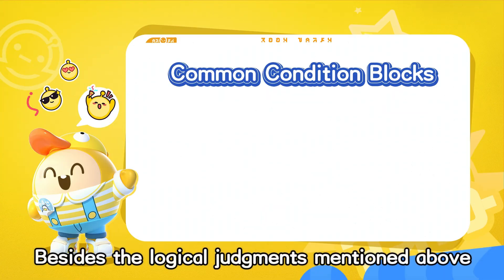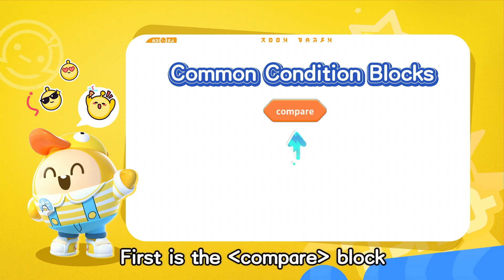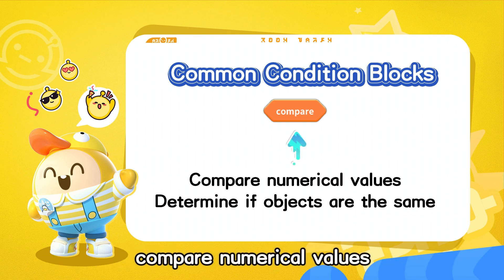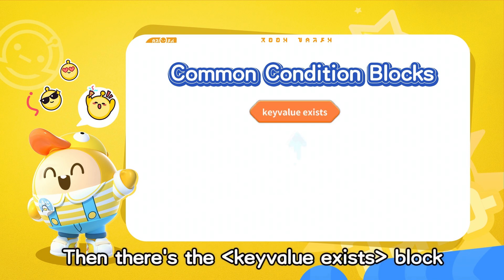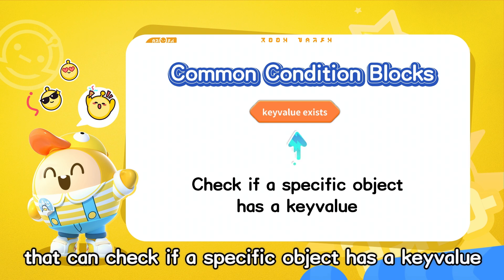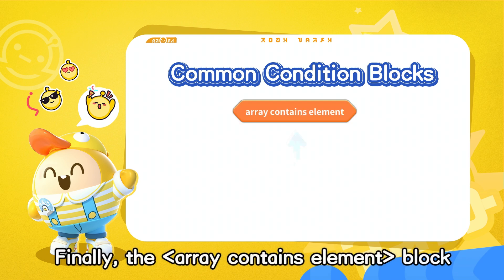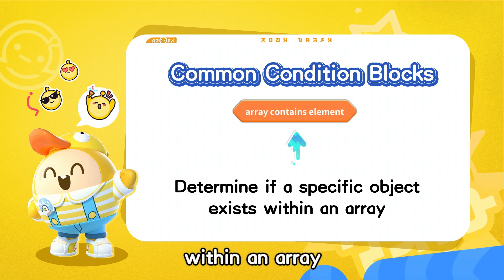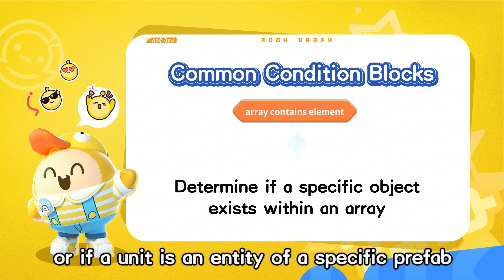Besides the logical judgments mentioned above, there are some condition blocks we often use. First is the Compare block, which can not only be used to compare numerical values, but also determine if objects are the same. Then there's the KeyValueExists block that can check if a specific object has a key value, allowing us to create custom filtering conditions. Finally, the array-contains-element block can determine if a specific object exists within an array. We can use it to determine whether a player belongs to a certain faction or if a unit is an entity of a specific prefab.